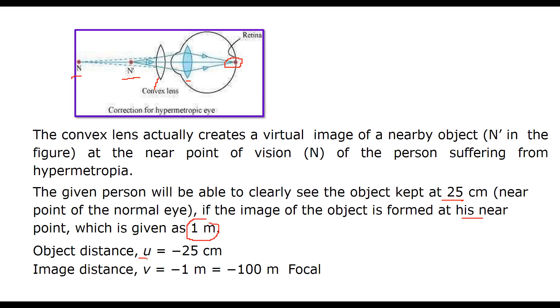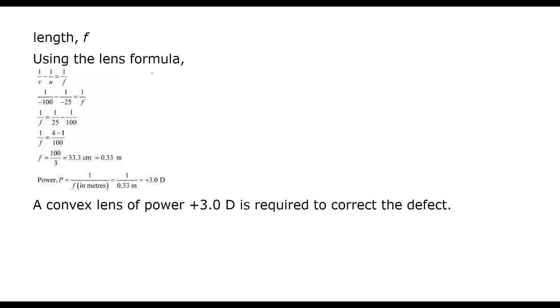U as minus 25 cm, V as minus 1 meter which is minus 100 cm. We have lens formula. Let us put this value in the lens formula. F will be 0.33. Power is 1 by F which is 1 by 0.33 meter which is 3.0 diopter with plus sign. So convex lens of power plus 3.0 diopter is required to correct this defect.